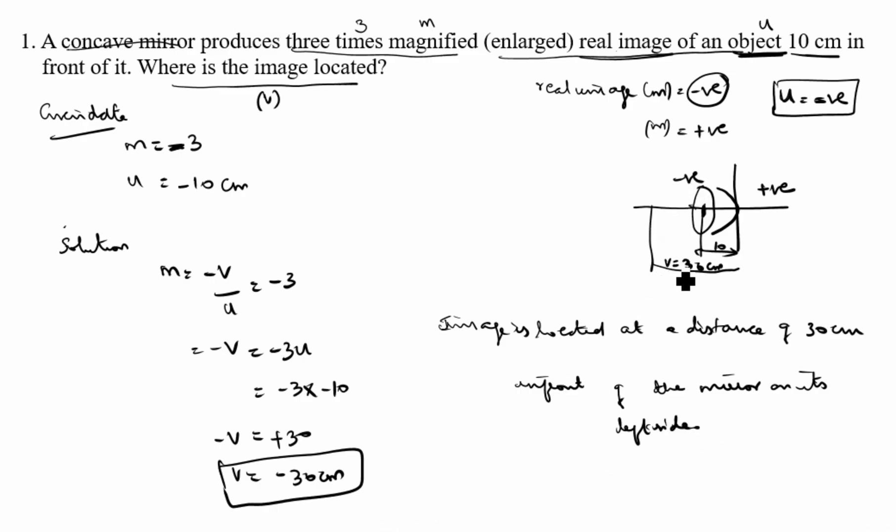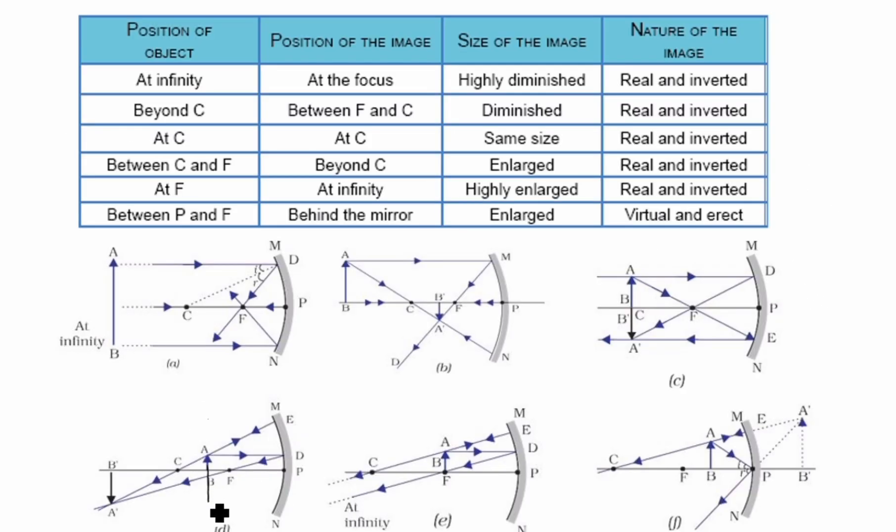You see here, in front of the mirror on its left side - this is the left side, this side is the right side. You see in this drawing, as per the question, u is 10 here, v is 30.